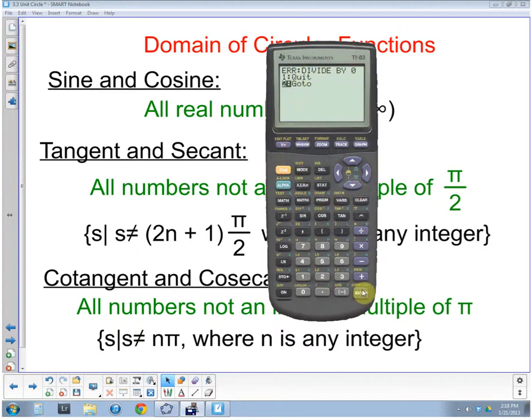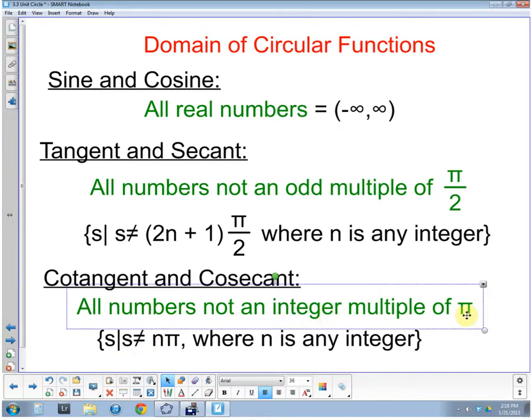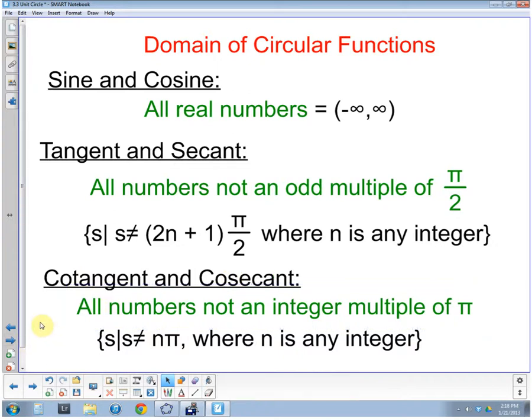So we remember, oh yeah, that's a problem. We can't do that. It's not in the domain. So we have any number, not an integer multiple of pi. So any number that is not a fraction multiplied by pi, can't put in for cotangent or cosecant. This is going to become important when we look again at the inverse functions.